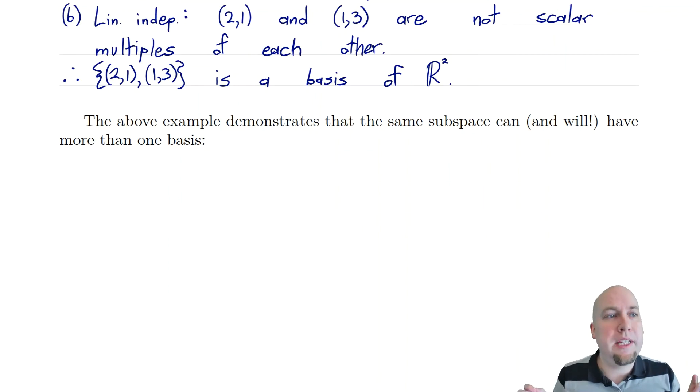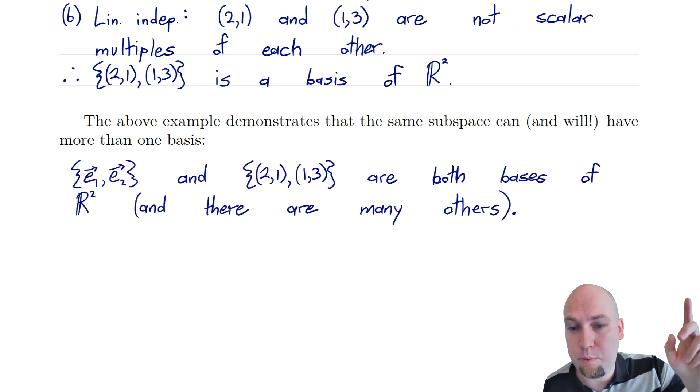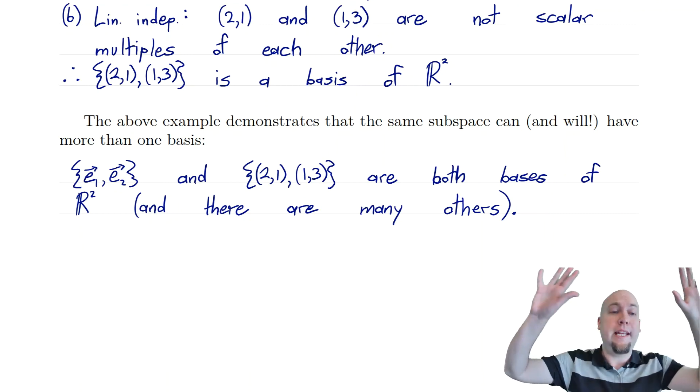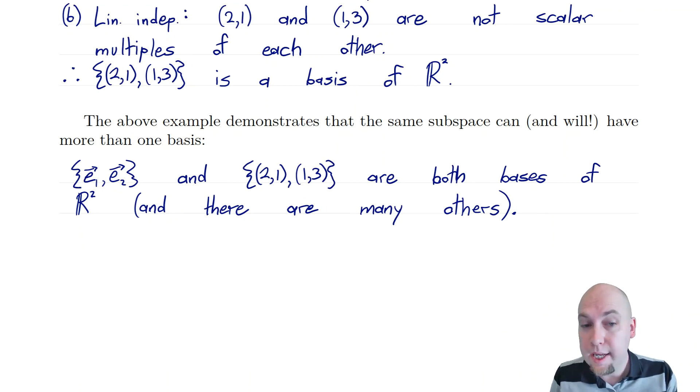The important takeaway from these two examples is that if you have a subspace, it can and will actually have more than one basis. So for example, we just showed that R^2 has two different bases. It has this set (2,1), (1,3) that we just talked about, but it also has the standard basis, e1, e2. Those are both bases of R^2. And there are actually infinitely many different other bases of R^2 as well. And for all subspaces, except for the zero subspace, all other subspaces have infinitely many different bases. So keep that in mind. Bases can look wildly different from each other, but that's okay. That's intended.